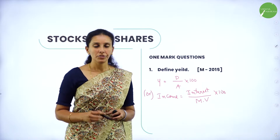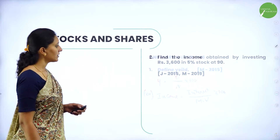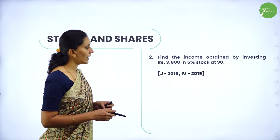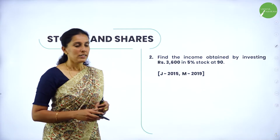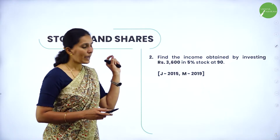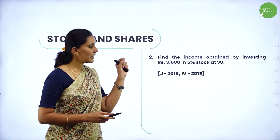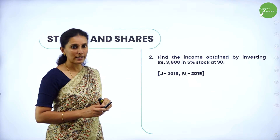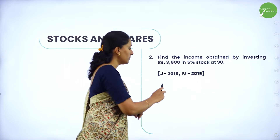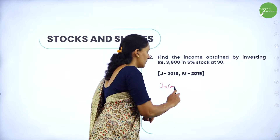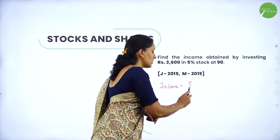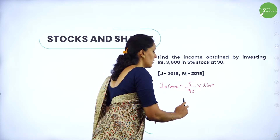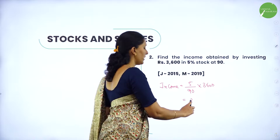Either you can write the definition or the formulas. Next question: find the income obtained by investing Rs.3600 in 5% stock at 90. Here 5% is the dividend, 90 is the market value per share, and total cash is Rs.3600. The income obtained is (5/90) × 3600, which equals Rs.200.